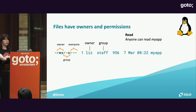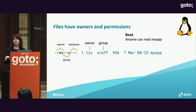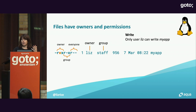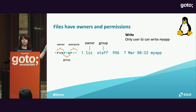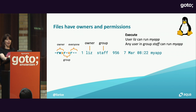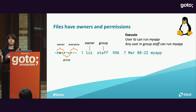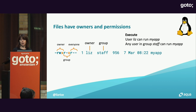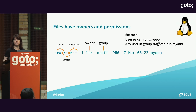In this example, the read bit is set for all three, so anybody who can get into the machine can read this particular file. Only the owner of the file, called Liz, has the write bit set, so Liz is the only person who can write to this file. Any user who's in the group 'staff' — because that group is associated with the file and the execute bit is set for the group as well as the owner — could run this file.